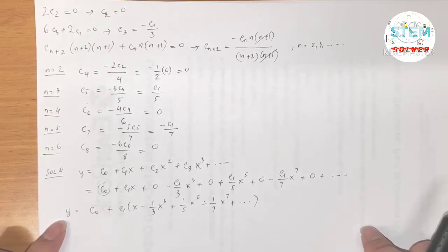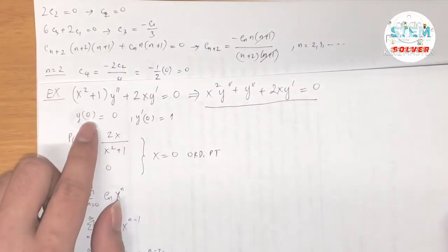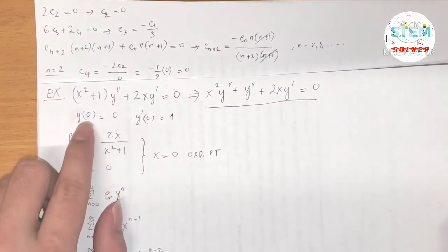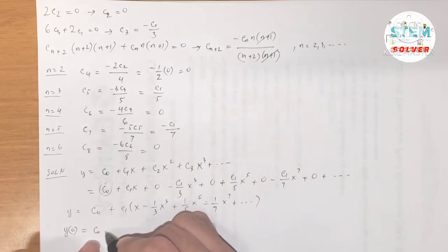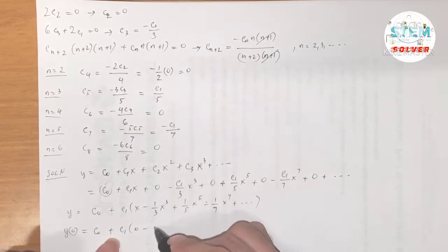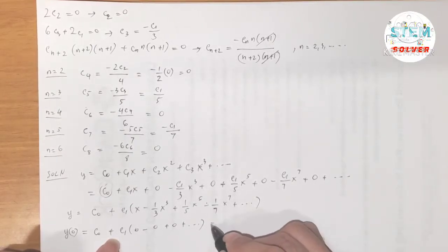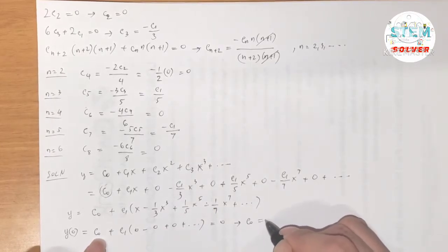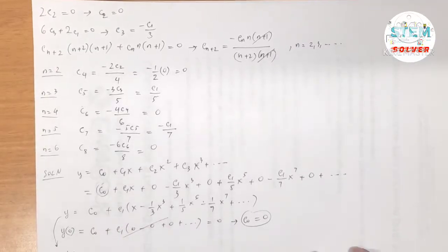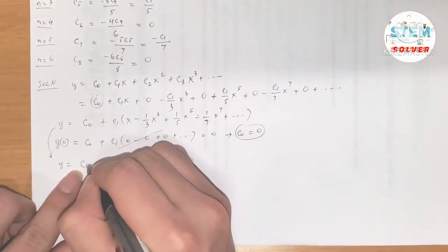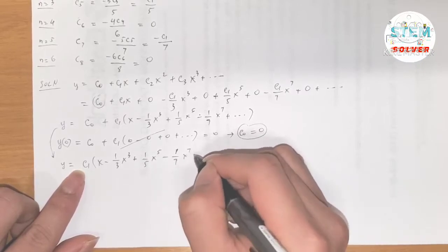Applying y(0) = 0: plugging x=0 into the general solution, all terms with x become 0, leaving just c₀ = 0. So c₀ = 0, and the solution simplifies to y = c₁·(x − x³/3 + x⁵/5 − x⁷/7 + …).